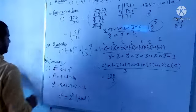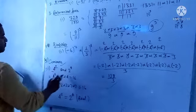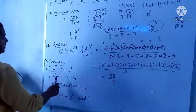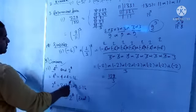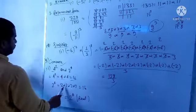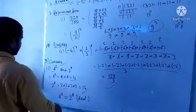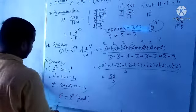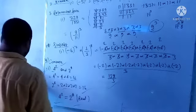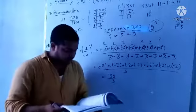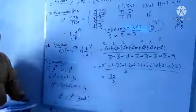4 to power 2, 2 to power 4. 4 to power 2 is 4 into 4, equals 16. 2 to power 4 is 16. Compare it.